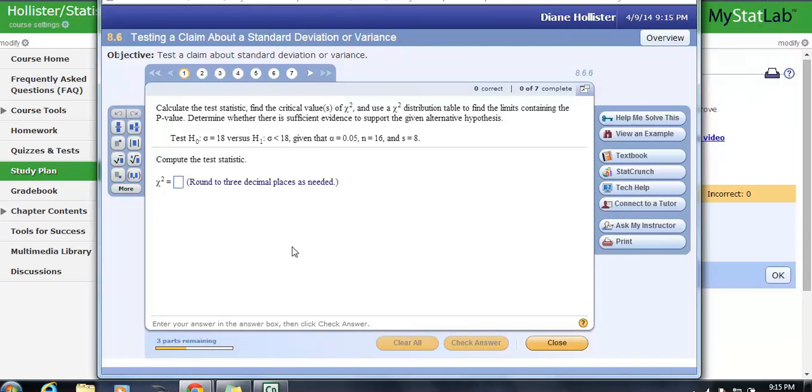Find our test statistic. So it says calculate the test statistic for this. Find the critical values of chi-squared and use the chi-squared distribution table. In this case, of course, we're going to use software.